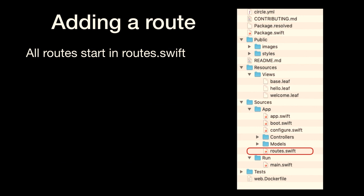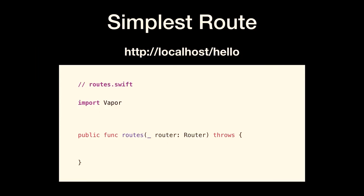Let's talk about adding a route. There's a file in our default Vapor application called routes.swift — that's where routes live. The simplest route looks like this: in routes.swift, I have a public function called routes, and in there I type router.get('hello'). If I go to my computer name slash hello, that's the route, and the request is routed to the code that follows where it says 'req in'. That's the code that's going to be run when 'hello' is in the path. In this case, I'm just returning the text 'hello' back out.